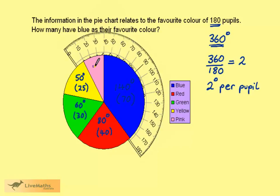And finally, this section is 30 degrees, so it represents 15 pupils.